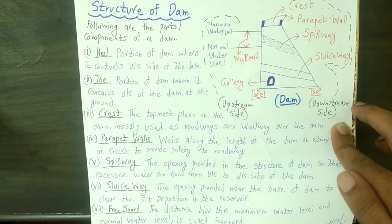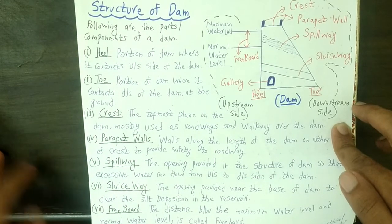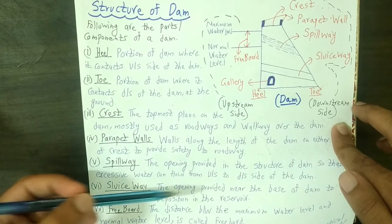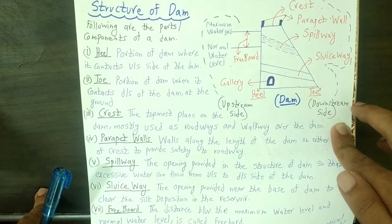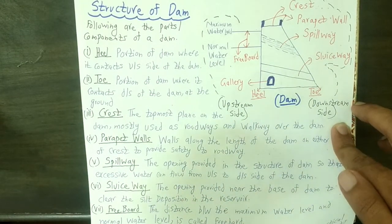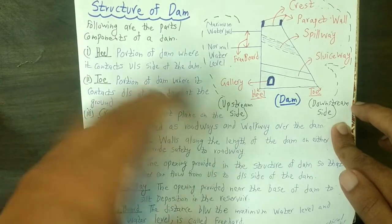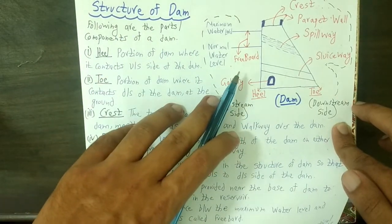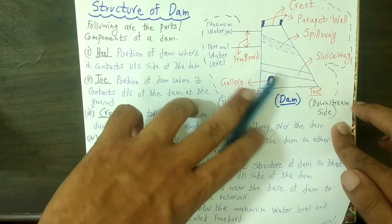Next we will talk about the sluiceway. The sluiceway is the opening provided near the base of the dam to clear the silt deposition in the reservoir. There is silt present in the water of the stream or river, so to avoid accumulation or deposition of silt, we provide an opening near the base of the dam.